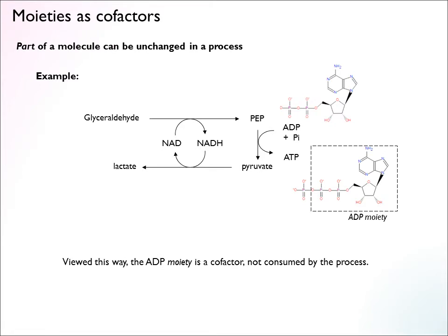Another variant is to think about a moiety — a part of a molecule — that could also be considered a cofactor. Looking more closely at the ATP production in this pathway, ATP is a product, but if you think about a moiety — a substructure of ATP — the entire ADP part of the molecule is conserved. All that happens is that a phosphate group gets tagged on: ADP is phosphorylated. So you can also think of ADP, the moiety, as a cofactor.